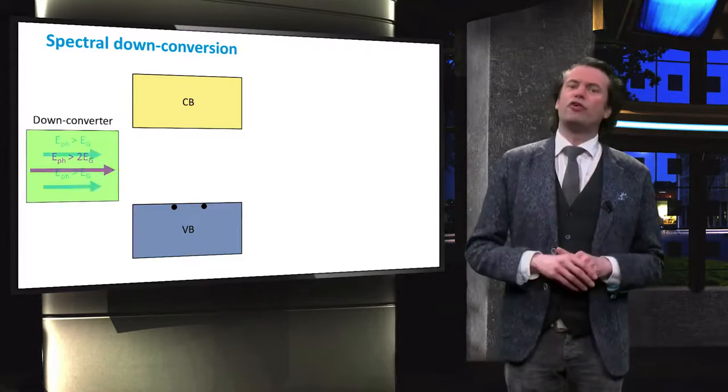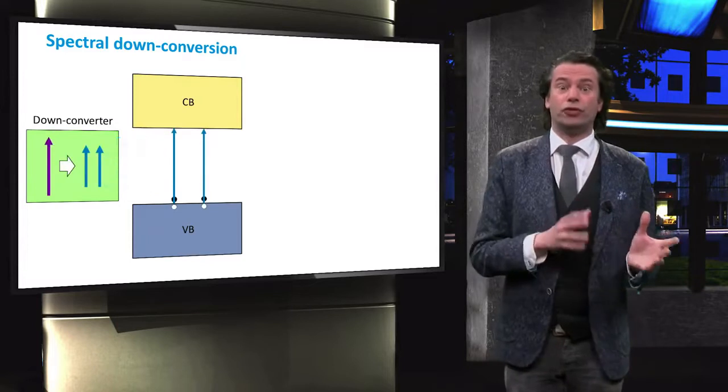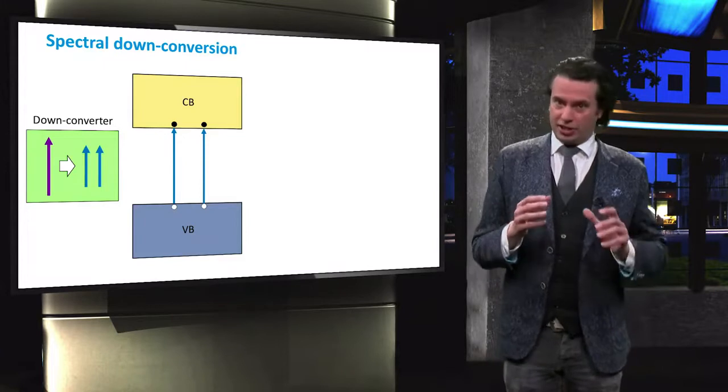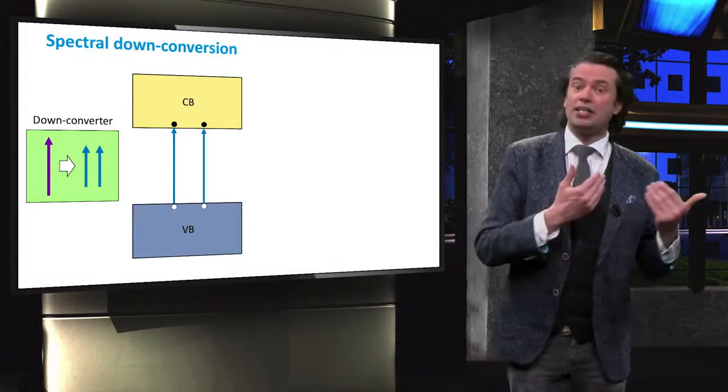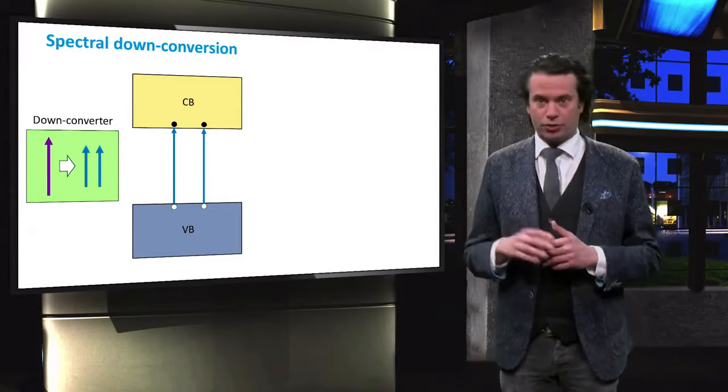A high energy photon is absorbed at the front of the solar cell and converted into at least two photons with lower energy. If the energy of this initial photon is more than twice the band gap energy, both photons can generate an electron-hole pair.